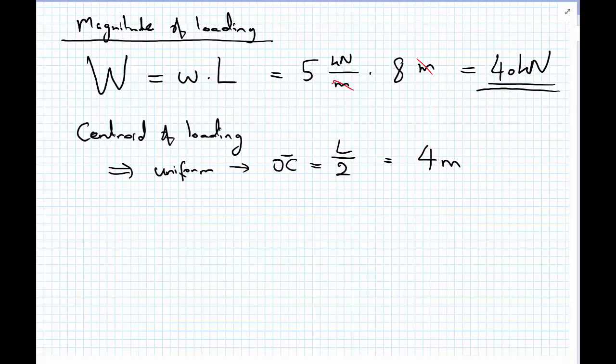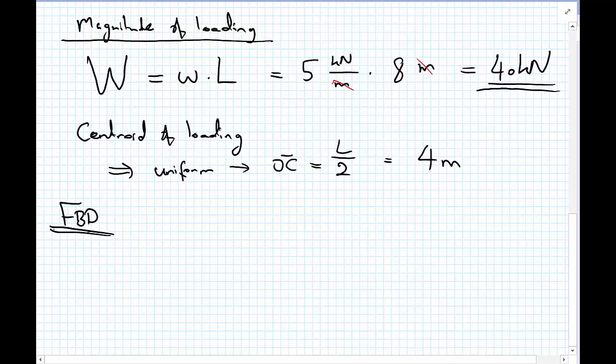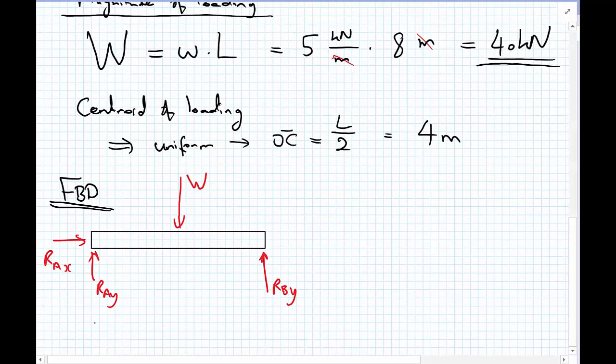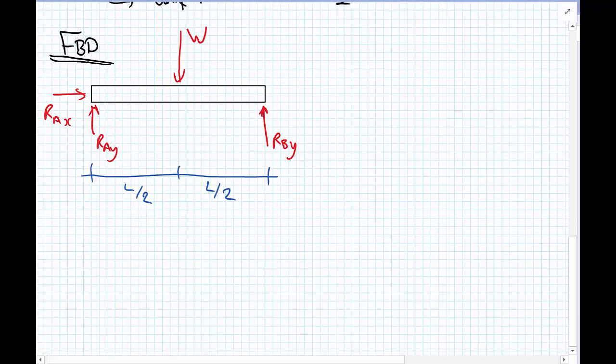So, as usual with statics problems, we need to draw the free body diagram. To calculate the reactions, we always use the free body diagram of the entire body. So, we have RAY, RAX, RBY, and finally, now we've got our big load W, which we've converted from our uniformly distributed load. And to complete our free body diagram, we add some dimensions. And so, we have L upon 2, and L upon 2. And now we can proceed, like we've done in previous section course, on rigid body equilibrium, to calculate the reactions.